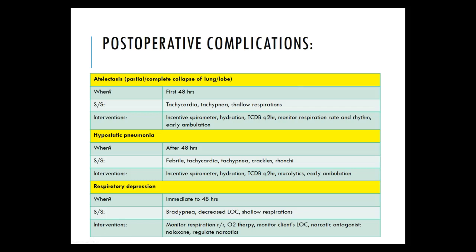Post-operative complications: atelectasis happens within the first 48 hours — interventions include incentive spirometry, hydration, turning, coughing, deep breathing every two hours, and early ambulation. Hypostatic pneumonia can happen after 48 hours — signs include fever, tachycardia, tachypnea, crackles, and rhonchi; interventions are the same plus mucolytics. Respiratory depression is a concern due to opioid pain medications. The incentive spirometer, turning, deep breathing, coughing, and early ambulation are critical for preventing pneumonia and atelectasis.